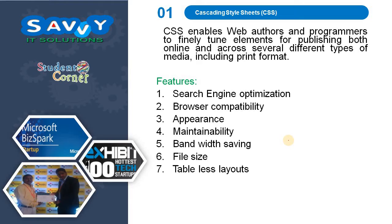Coming to the first one — CSS, cascading style sheets, also called CSS. CSS enables web authors and programmers to finely tune elements for publishing both online and across several different types of media including print format. The features are: search engine optimization, browser compatibility, appearance, maintenance, bandwidth saving, file size, and tableless layouts.